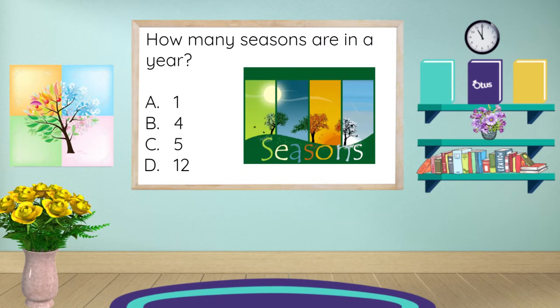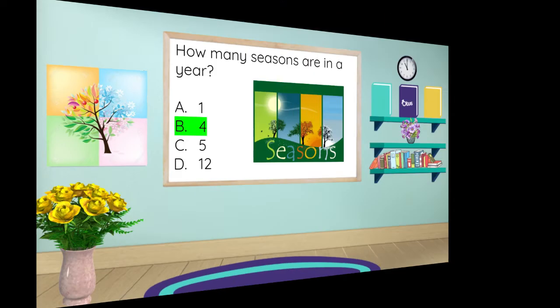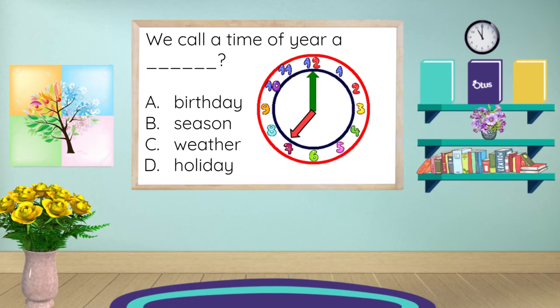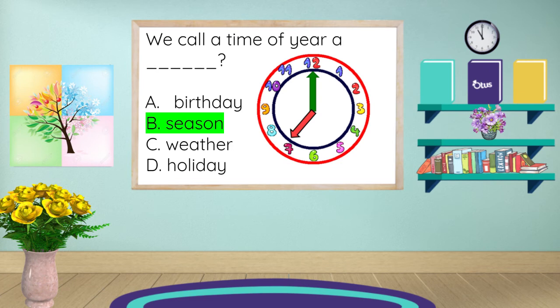How many seasons are in a year? We call a time of year a: A, birthday; B, season; C, weather; or D, holiday. If you said season, you are correct again.